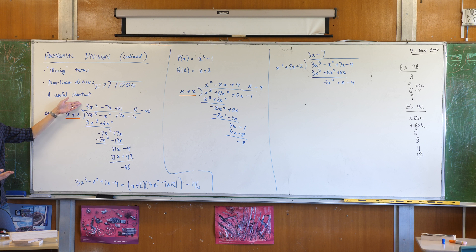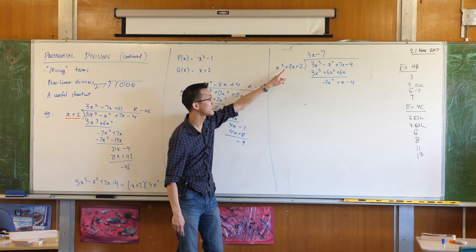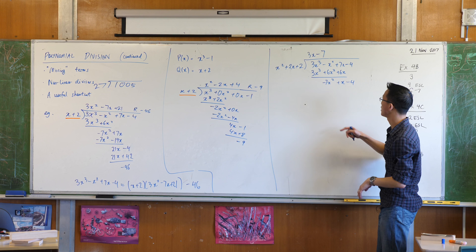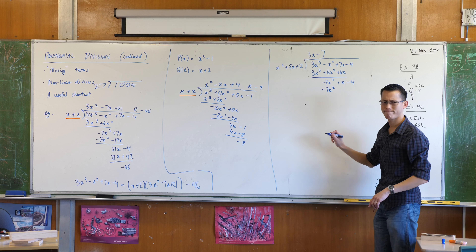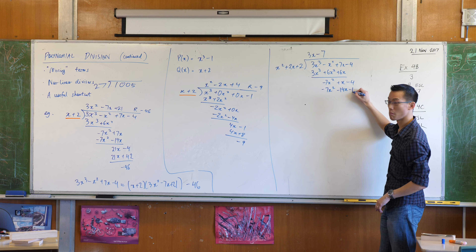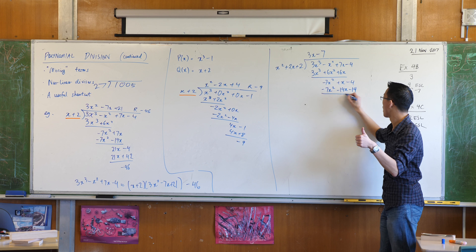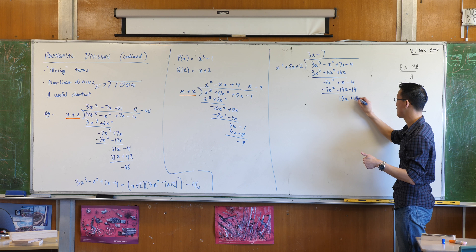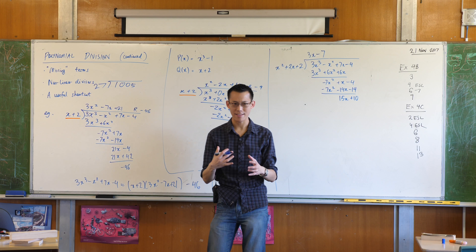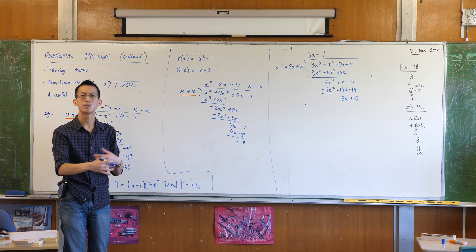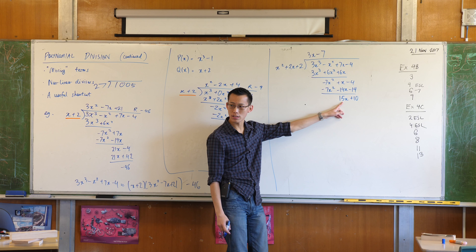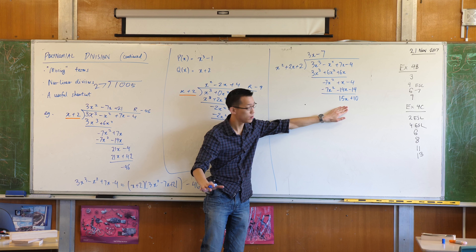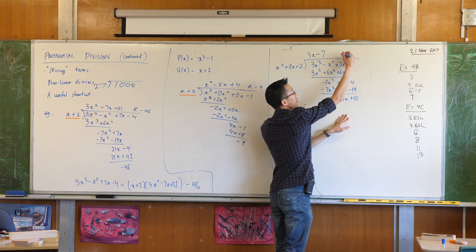How many x² terms are in −7x²? That's −7. And notice what's happened to the quotient — it's a linear thing. When you took a cubic (degree 3) and divided by degree 1, you ended up with degree 2. Well, if you take degree 3 and divide by degree 2 instead, you should end up with degree 1. That's just index laws. So multiply back: −7 times x² gives −7x², times 2x gives −14x, times 2 gives −14. Subtraction: those cancel, giving 15x + 10.